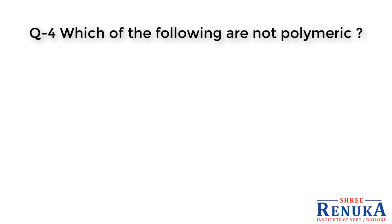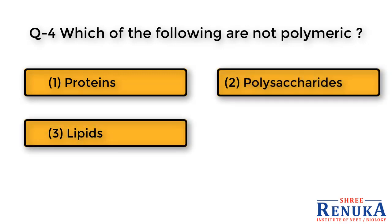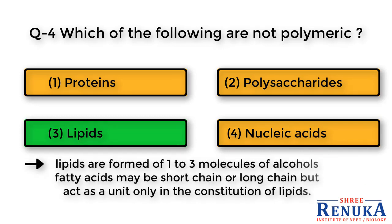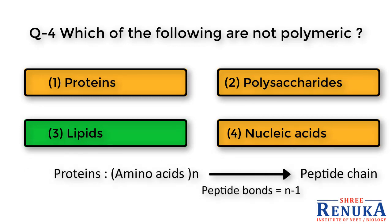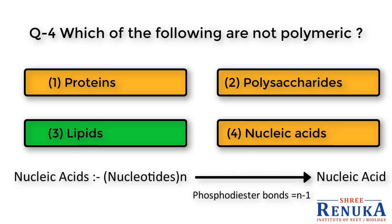Question 4: Which of the following are not polymeric? Options: 1. Proteins, 2. Polysaccharides, 3. Lipids, 4. Nucleic acids. The answer is number 3, lipids. Lipids are formed of one to three molecules of fatty acids and alcohols — fatty acids may be short or long chain but act as a unit. Proteins are polymers of amino acids with N-1 peptide bonds. Polysaccharides are polymers of monosaccharides with N-1 glycosidic bonds. Nucleic acids are polymers of nucleotides with N-1 phosphodiester bonds. So lipids are the only non-polymeric structure from the given options.